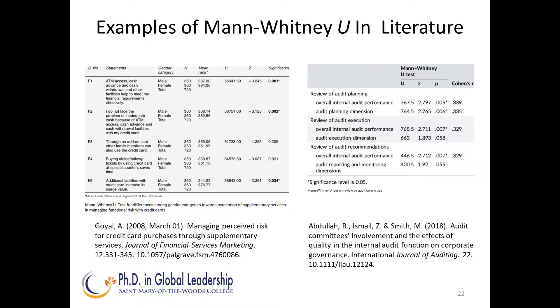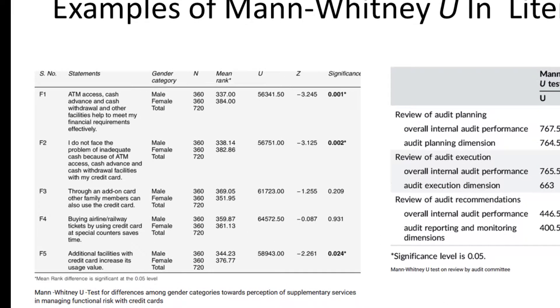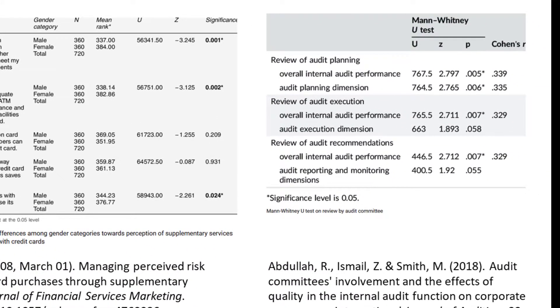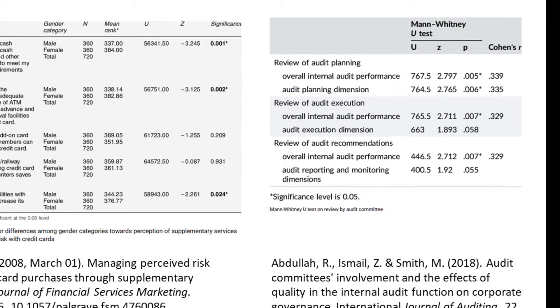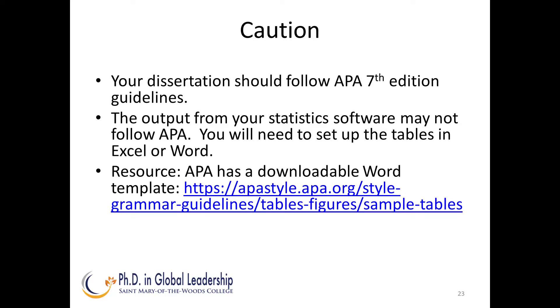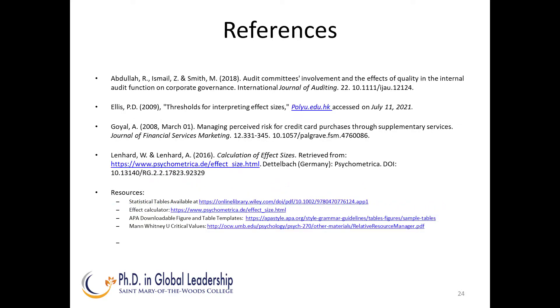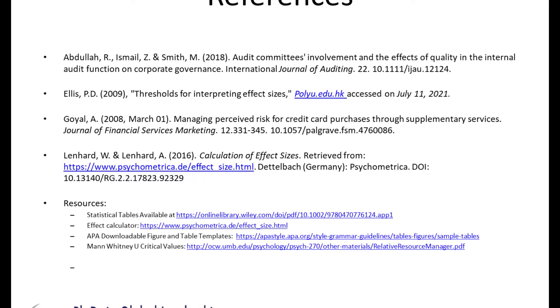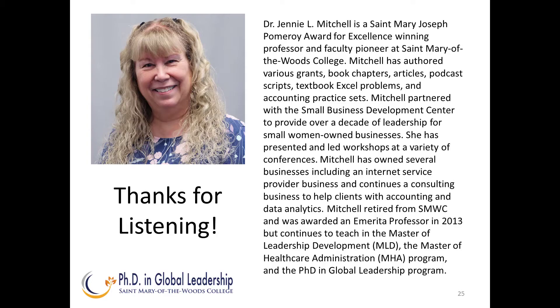The next slide shows a couple of examples of Mann-Whitney-U tables in real studies. One is Goyal's 2008 study of perceived risk of credit card purchase and the other is Abdullah's 2018 audit committee involvement. Take a minute to look over these example tables that communicate results. As a caution, just a reminder that your dissertation should follow APA guidelines. We are currently on the 7th edition, however check for updates. You may want to work with APA's downloadable Word template. Here are the references used for this presentation. Thanks for listening!